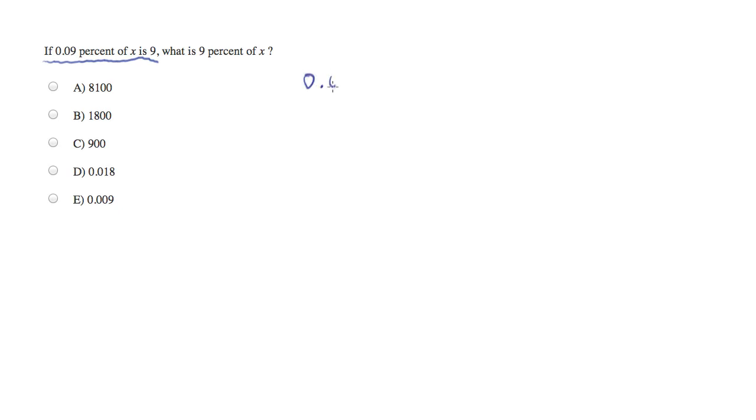Numbers become themselves so 0.09 is itself, percent is always divided by a hundred, of becomes multiplication, variable names are themselves, so there's X, is becomes an equal sign and again numbers become themselves.